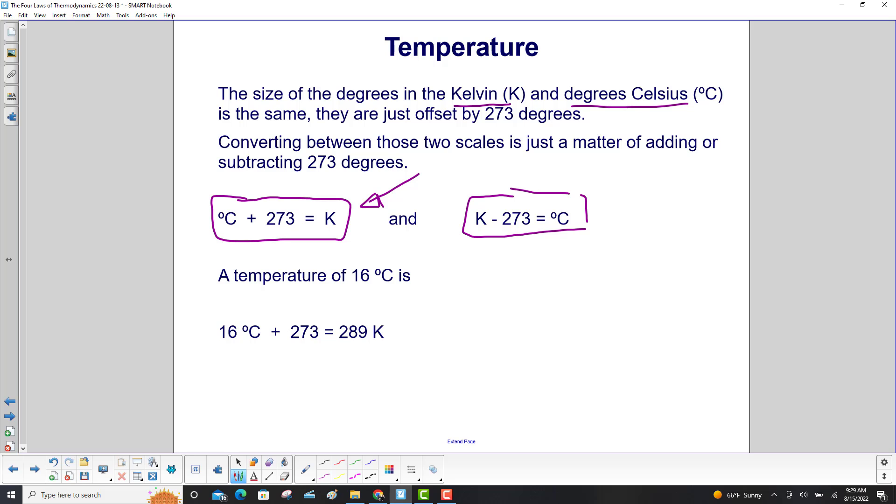A temperature of 16 degrees Celsius, therefore, is 16 degrees Celsius plus 273, which equals 289 Kelvin. Notice you don't say degrees for Kelvin; you just say Kelvin.